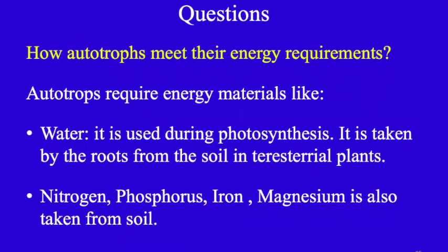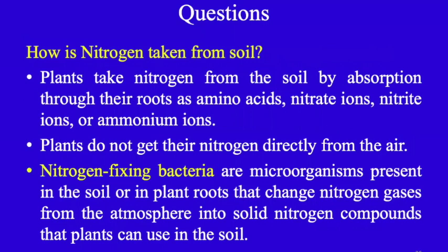Autotrophs require energy materials like water, minerals, nitrogen, phosphorus, iron, and magnesium. Water is used during photosynthesis and is taken by the roots from the soil in terrestrial plants. Nitrogen, phosphorus, iron, and magnesium are also taken from the soil. Plants take nitrogen from the soil by absorption through their roots as amino acids, nitrate ions, nitrite ions, or ammonium ions — they do not get nitrogen directly from the air. Nitrogen-fixing bacteria are microorganisms present in the soil or plant roots that change nitrogen gas from the atmosphere into solid nitrogen compounds that plants can use.